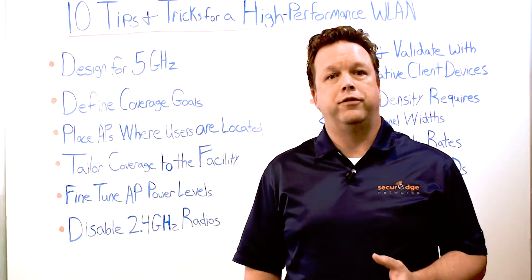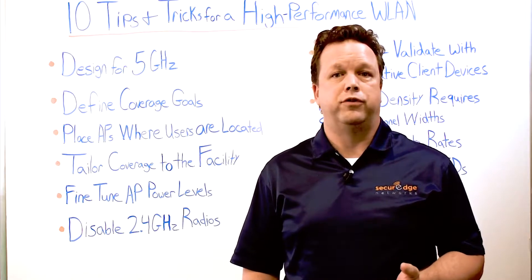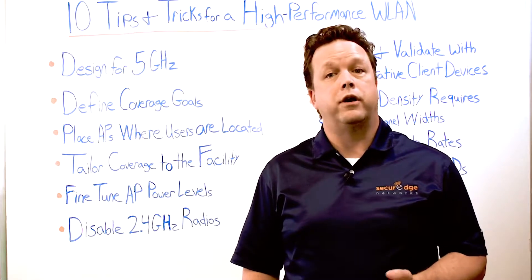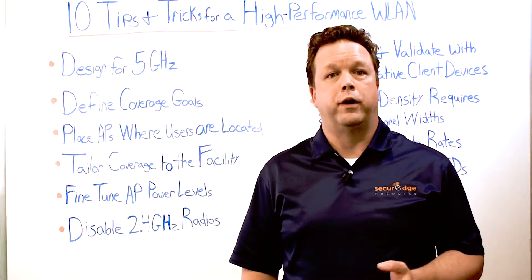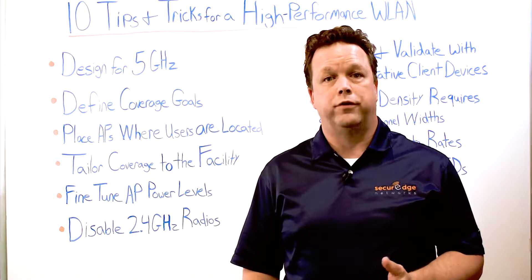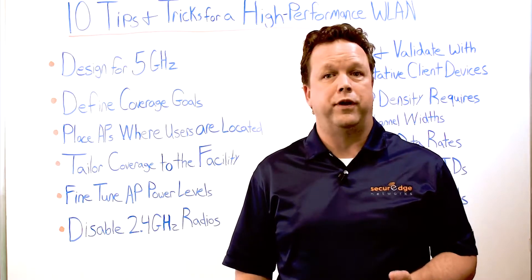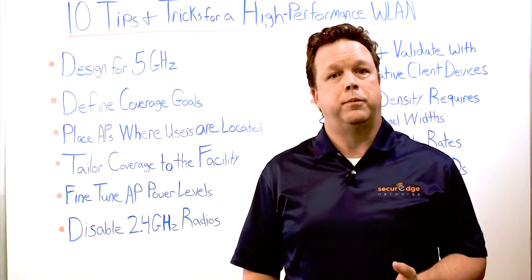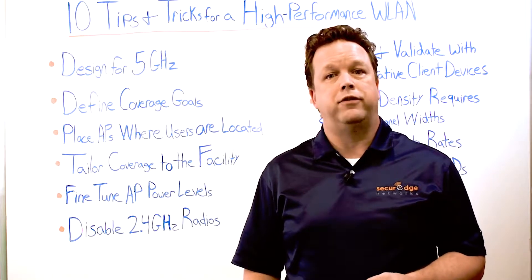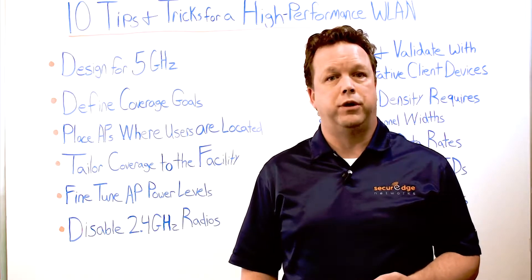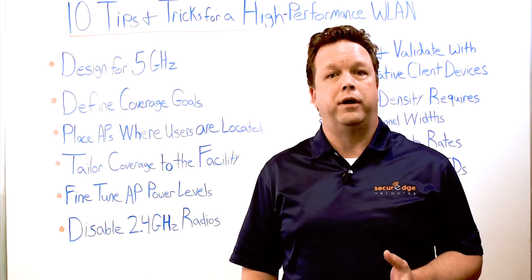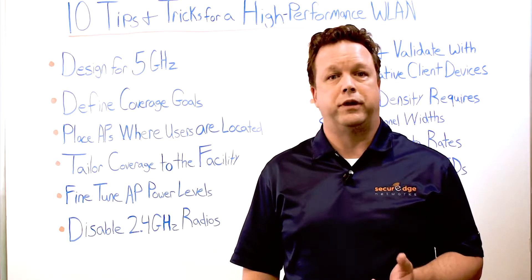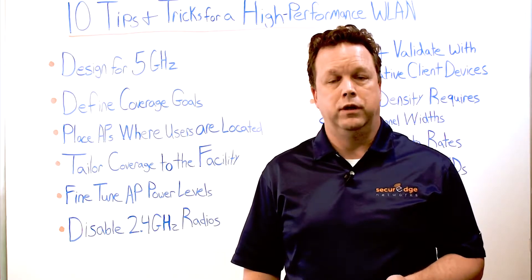Another tip is to tailor your coverage to the facility. Utilize RF obstructions like walls, doors, stairwells, and elevator shafts to attenuate the signal between APs and minimize channel reuse. Consider using proper antennas and orientation for optimal signal propagation.